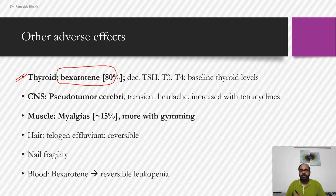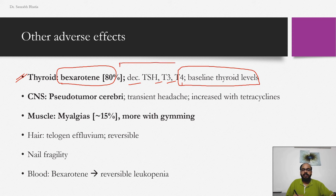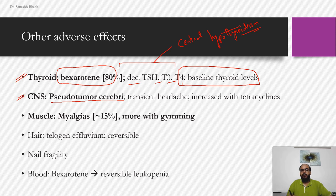Other side effects include decreased thyroid hormone levels — decreased TSH, T3, and T4 — seen mostly with bexarotene in about 80% of patients, representing central hypothyroidism. Get a baseline thyroid level if suspecting thyroid issues before or after starting treatment. This requires careful monitoring.